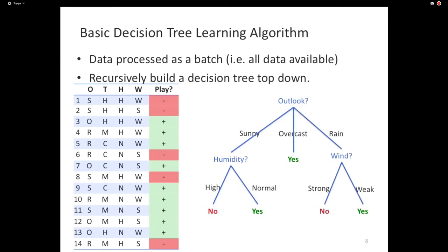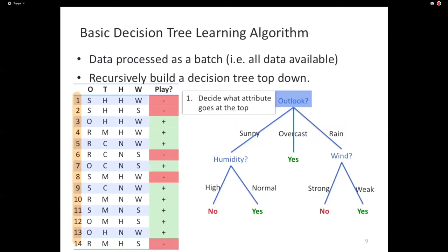This algorithm is recursive; it builds the tree from the top down. At any point, you only have to answer one question: which feature should the data be split on right now? Given all the examples, which feature should we split on? I'm using the word 'attribute' here because that was the terminology used in the decision tree literature.